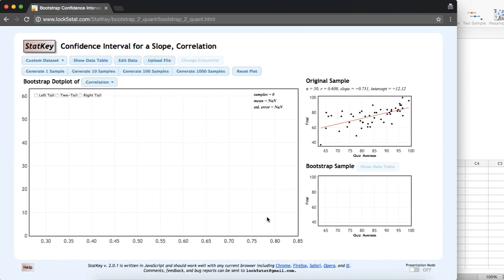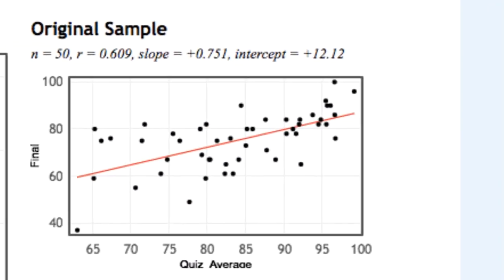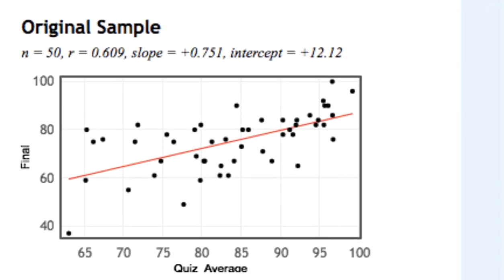On the right side, we have our original sample. Our sample size is n equals 50. StatKey has computed our sample correlation to be 0.609.